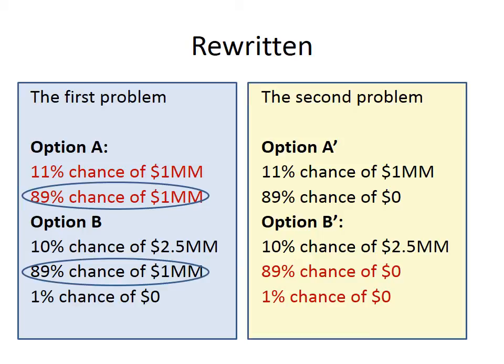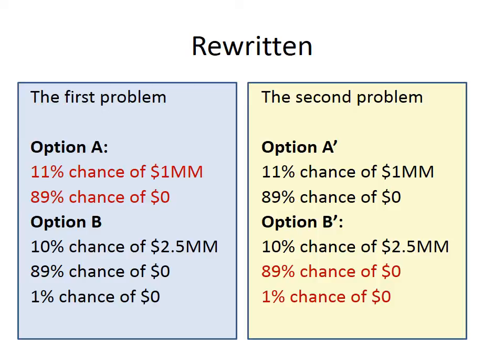Next, I look at both options in the blue box and identify a feature common to both: the 89% chance of winning $1 million. It's there in Option A and also in Option B. I then replace that $1 million in each case with nothing — in other words, I cancel out the 89% chance of $1 million from both Option A and Option B.